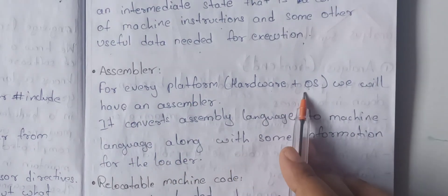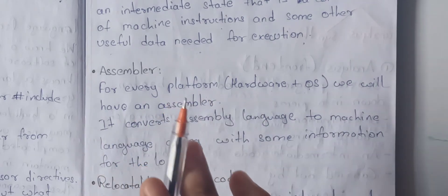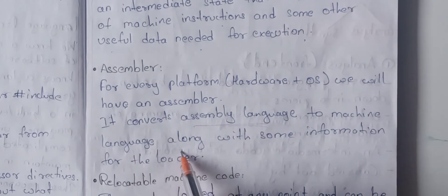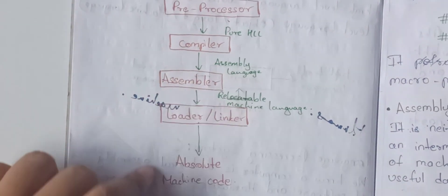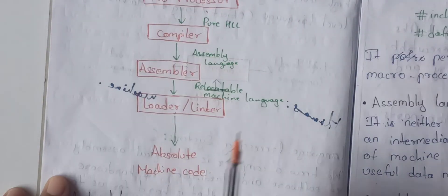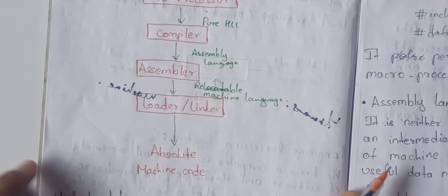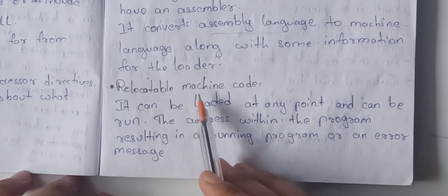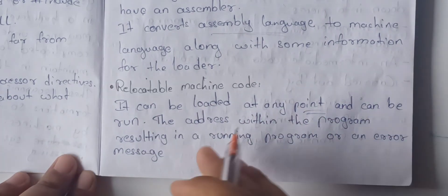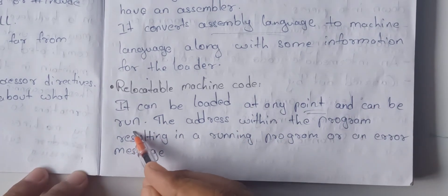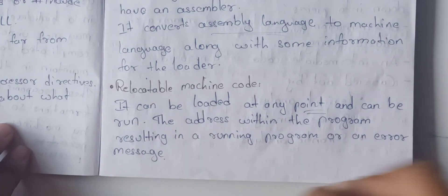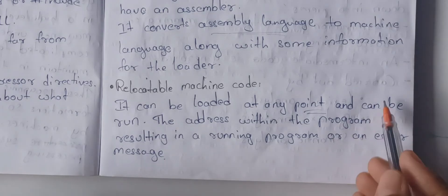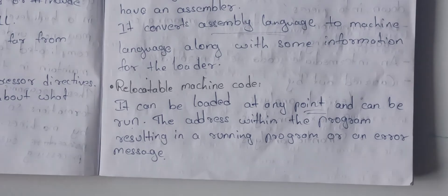For every platform — hardware plus OS — we will have an assembler. The assembler converts assembly language to machine language, along with some information for the loader. The resulting output is relocatable machine code, which can be loaded at any point and run, resulting in a running program or an error message.